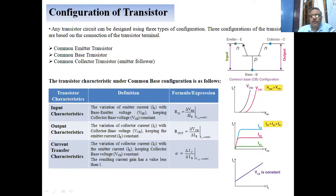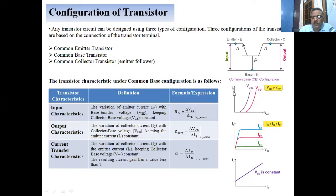In the common base configuration, there are three kinds of characteristics. First is the input characteristic, second is the output characteristic, and third is the current transfer characteristic, also called the mutual characteristic. The input characteristic is the graph showing how the emitter current varies with the change in base-emitter voltage.